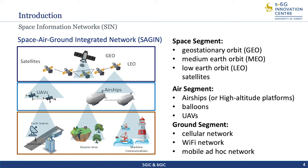Space Information Networks, also termed as Space Air Ground Integrated Network, has drawn dramatic attention for its advantages such as seamless wide area connections, high throughput, and strong resilience for 5G and beyond communications. There are mainly three segments: a space segment with satellite network, an air segment with aerial network, and a ground segment with terrestrial network. Compared to traditional ground or satellite networks, UAV or HAPS-aided communication as a key part of Space Information Network can be applied not only in scenarios where ground infrastructure cannot be accessed, but also for emergency communications in crowded or disaster areas.